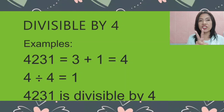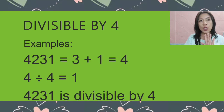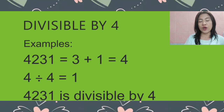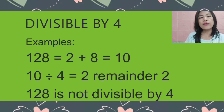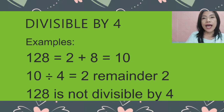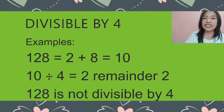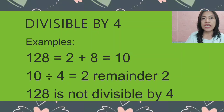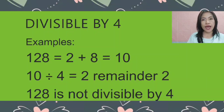You have to add those 2 last digits. In divisible by 3, we add all the numbers; here in divisible by 4, we just add the 2 last digits and divide by 4. Another example: we have 128. The last 2 digits are 2 and 8. So 2 plus 8 equals 10, and 10 divided by 4 gives 2 remainder 2. Therefore, 128 is not divisible by 4.